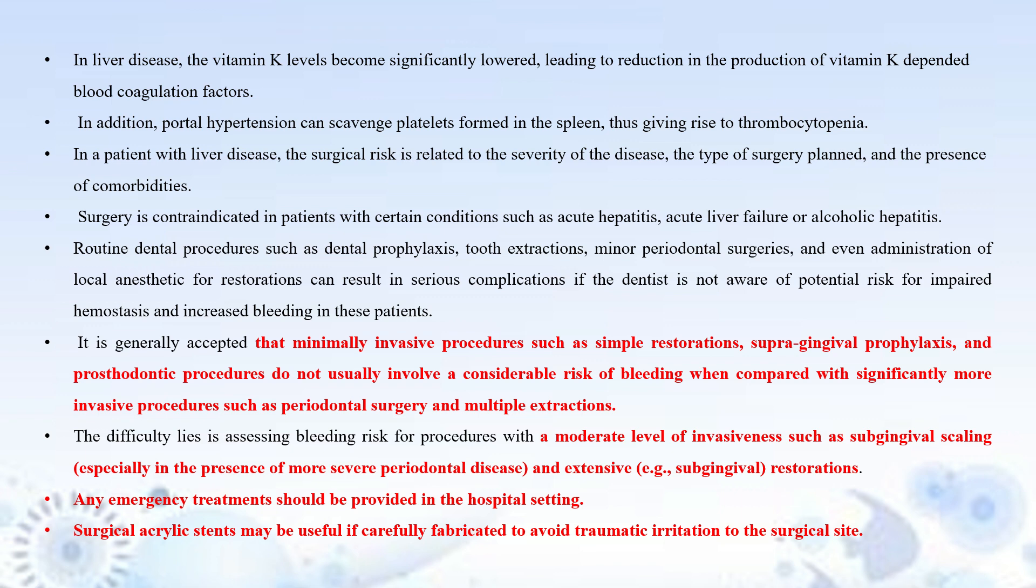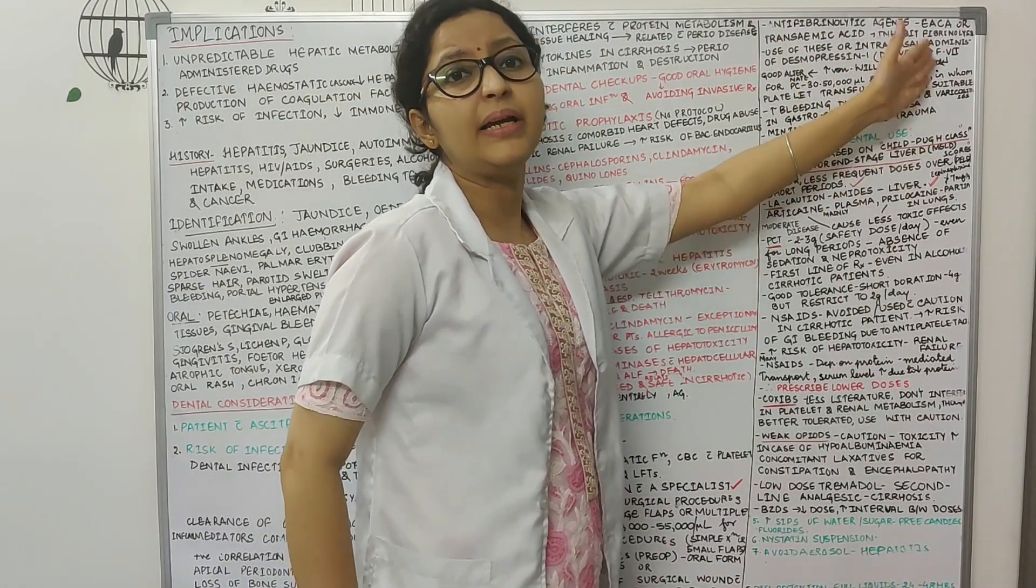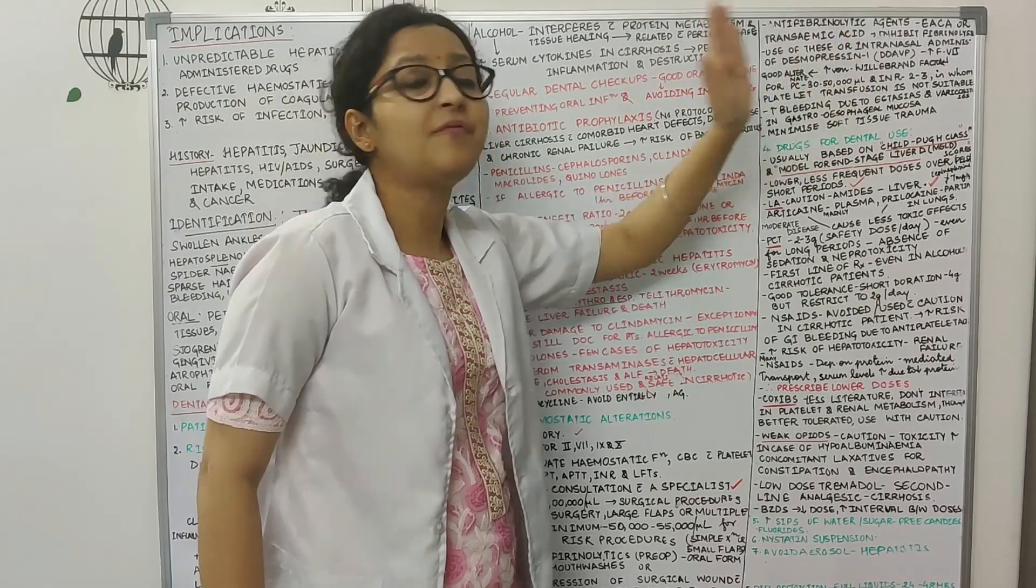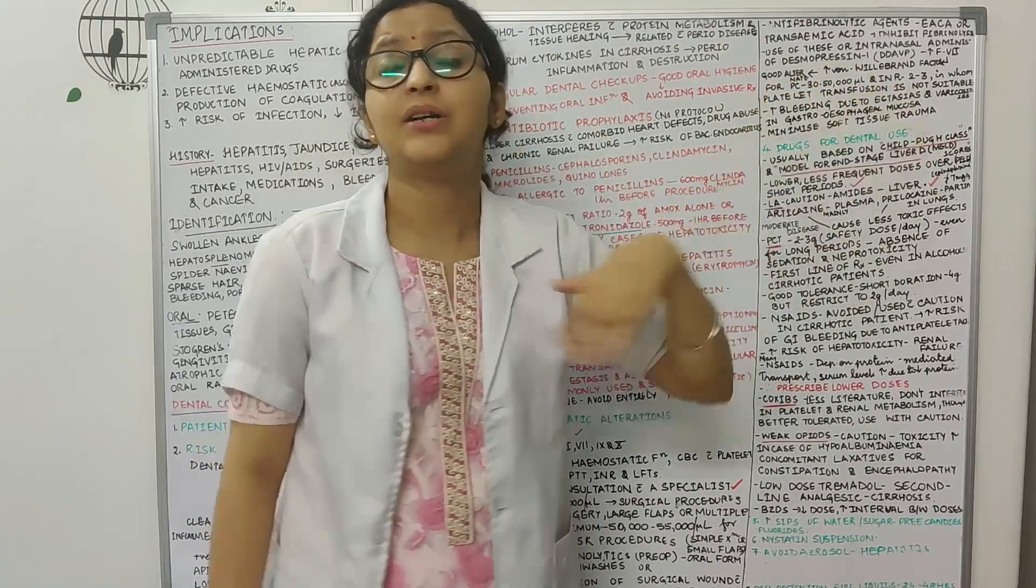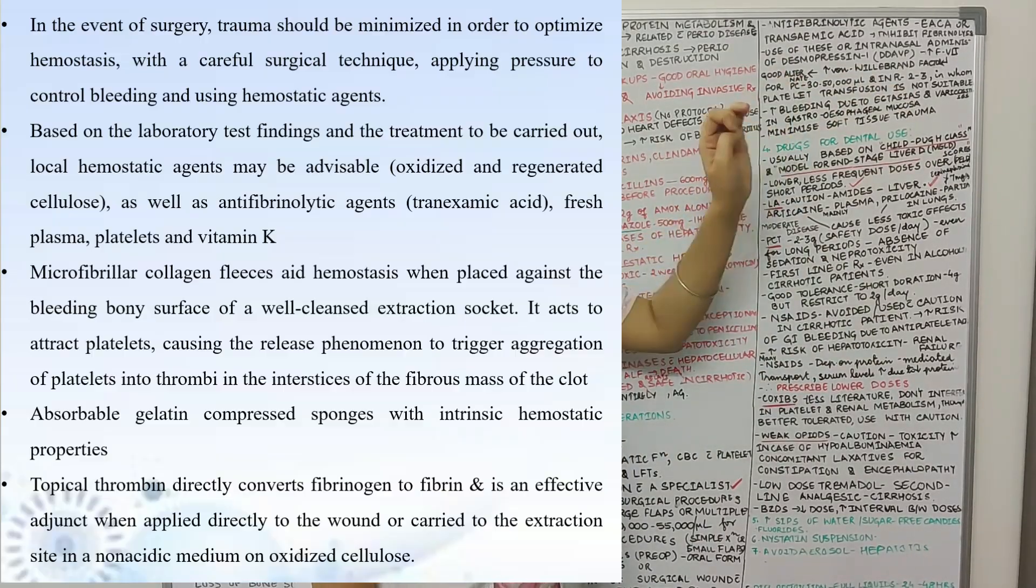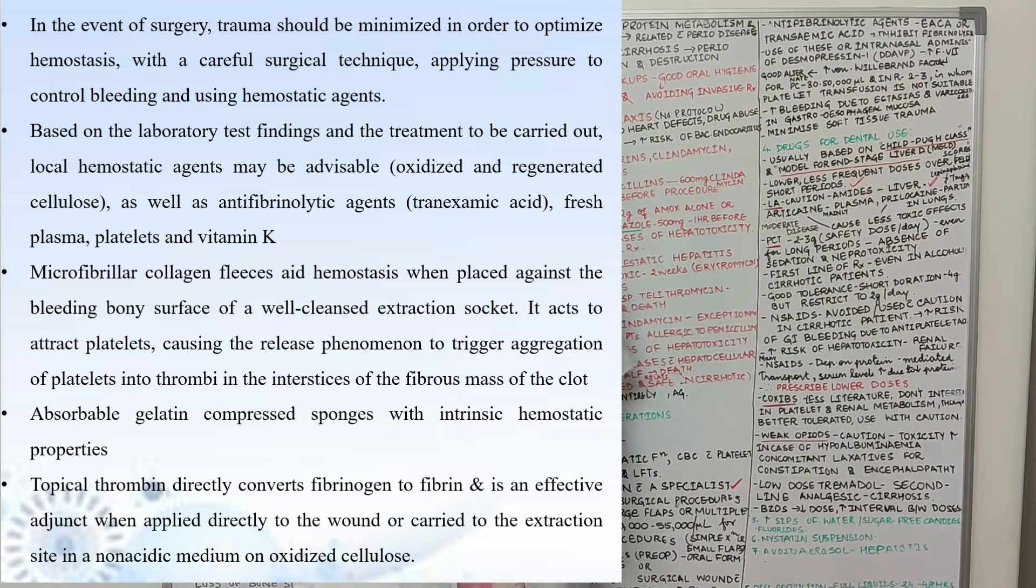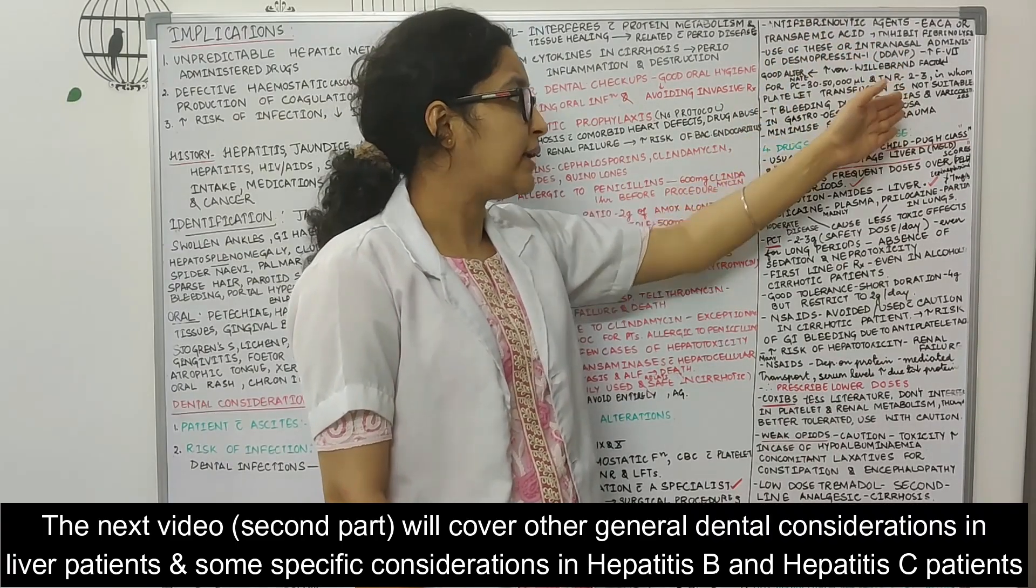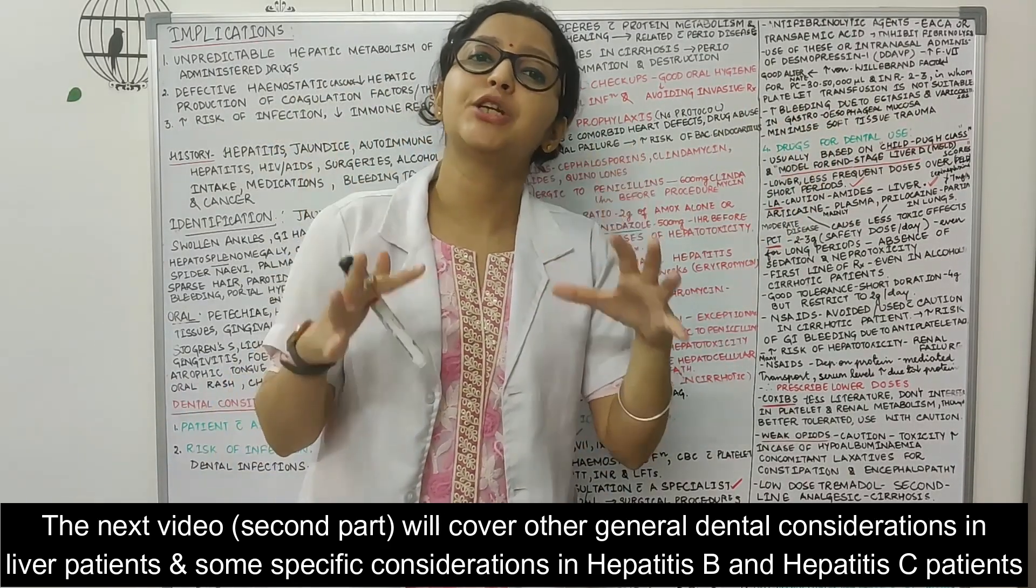Then intranasal desmopressin can be given, it increases the production of factor VIII and in turn increases von Willebrand factor and it is a good alternate for patients in which you cannot do platelet transfusion. So whenever the platelet count is between 30 to 50,000 and the INR is between two to three and platelet transfusion cannot be given due to some other reason, we can give desmopressin as a good alternate. Then in these patients we have to minimize any kind of soft tissue trauma whenever we are doing any kind of treatment.